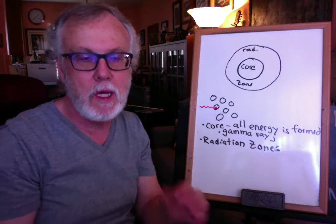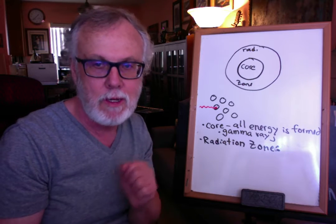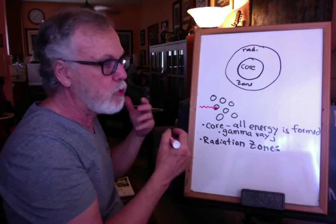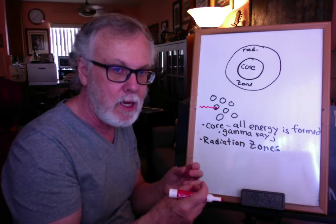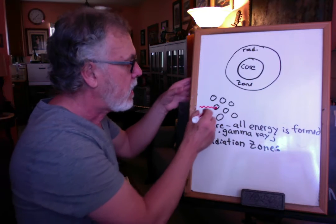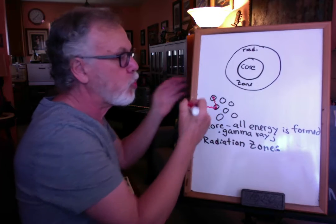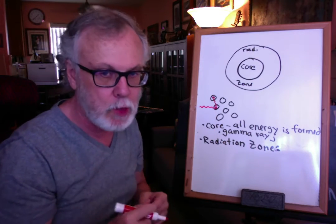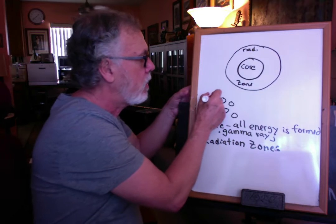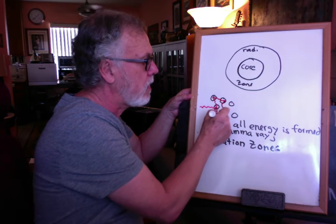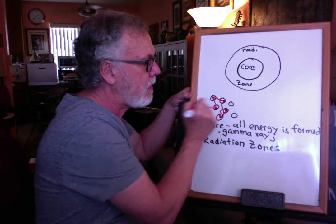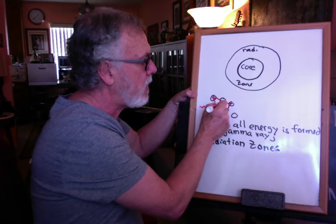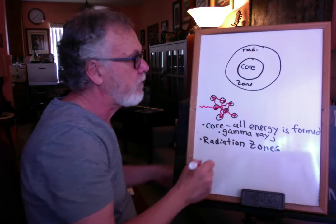Atoms don't like that additional energy because it puts them at a higher energy state than what nature likes. Nature always likes things to be as low energy as possible. So because that atom has absorbed energy and is now at a higher energy state, to reduce it back, energy is emitted and then immediately absorbed again — absorbed, emitted, reabsorbed. This one photon of gamma ray radiation is emitted and absorbed and basically randomly moves toward the surface of the radiation zone.